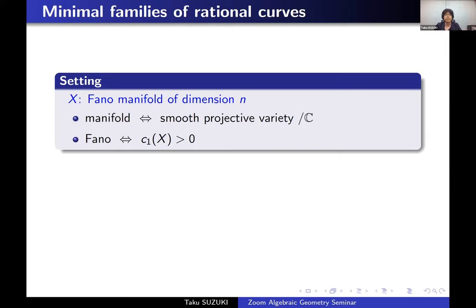First, let us review minimal families of rational curves. Throughout this talk, let X be a Fano manifold and let N be the dimension of X. Here, manifold means a smooth projective variety over the complex field. And Fano manifold means a manifold whose first Chern class is positive. For example, projective space, del Pezzo surface, Grassmannian, and so on.